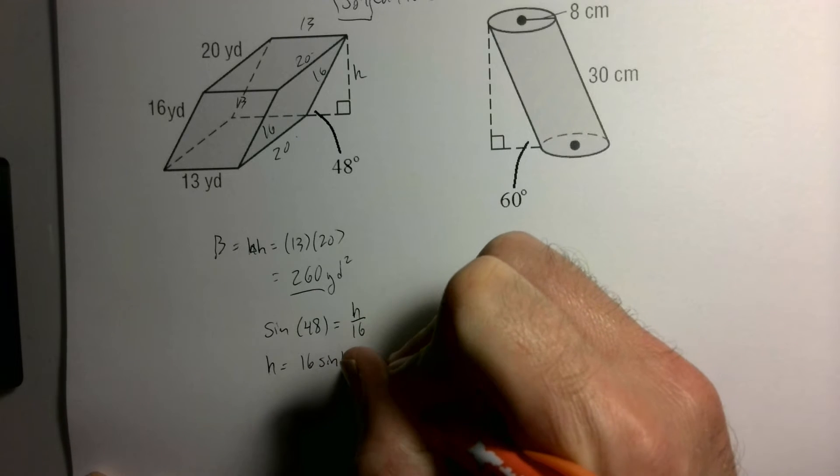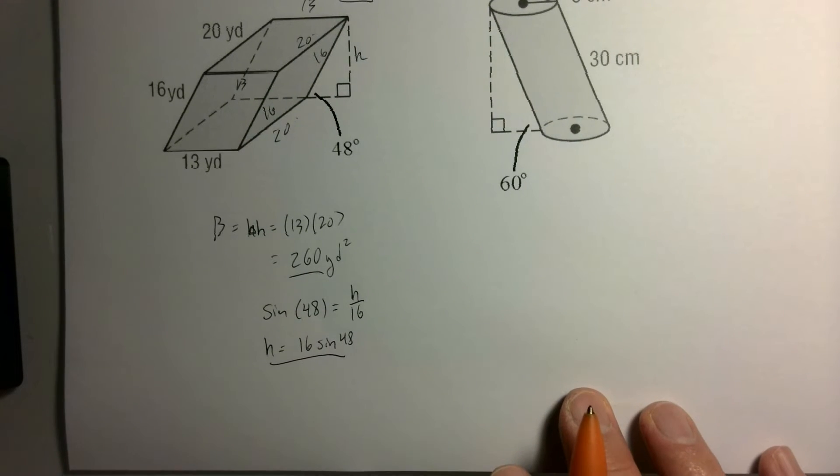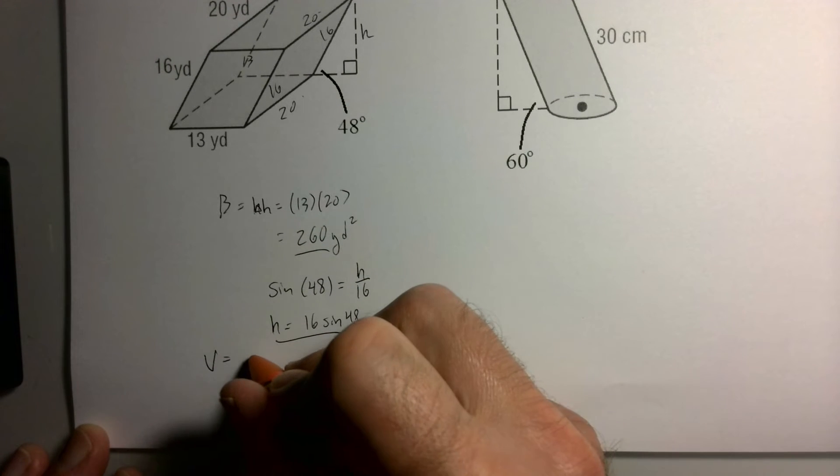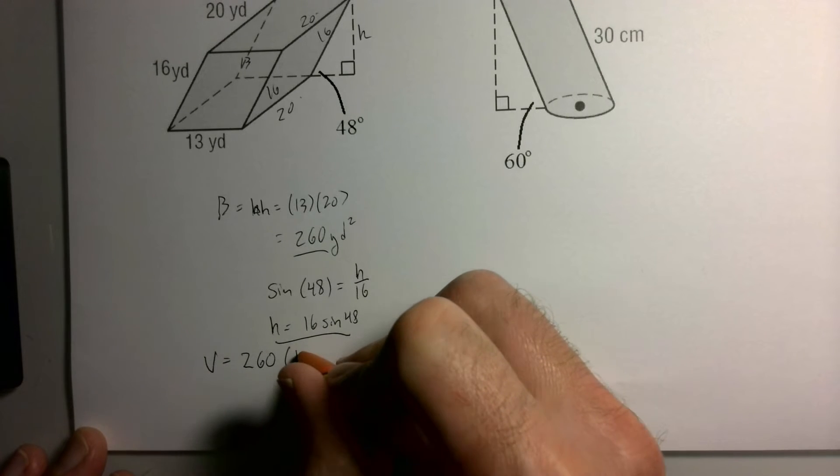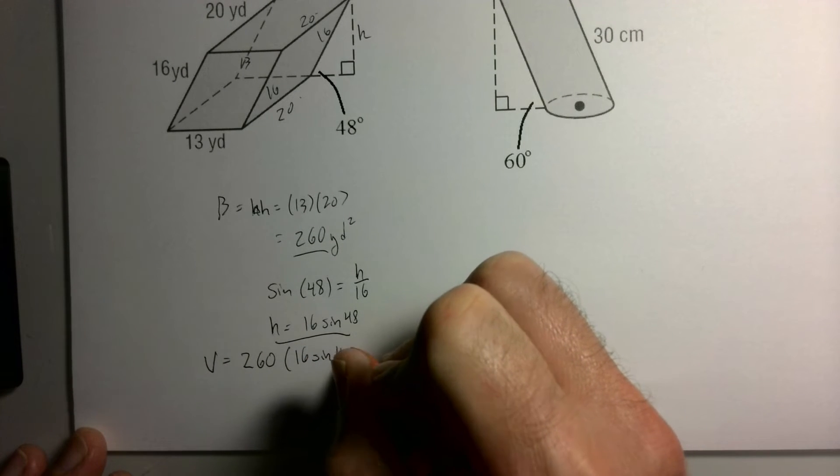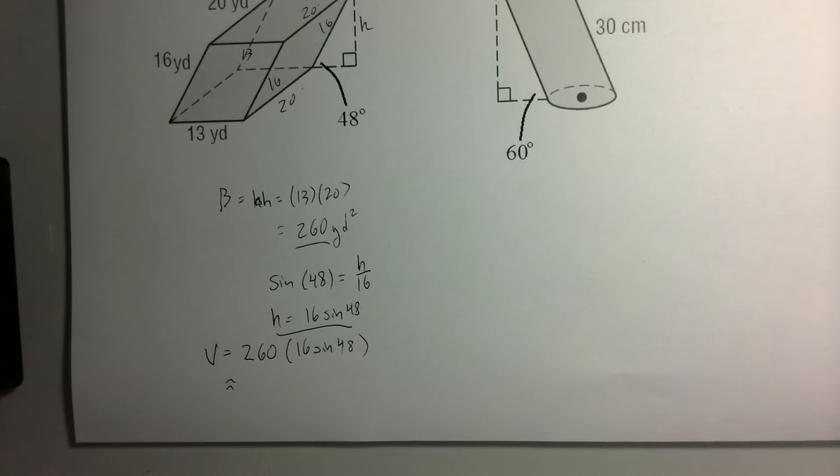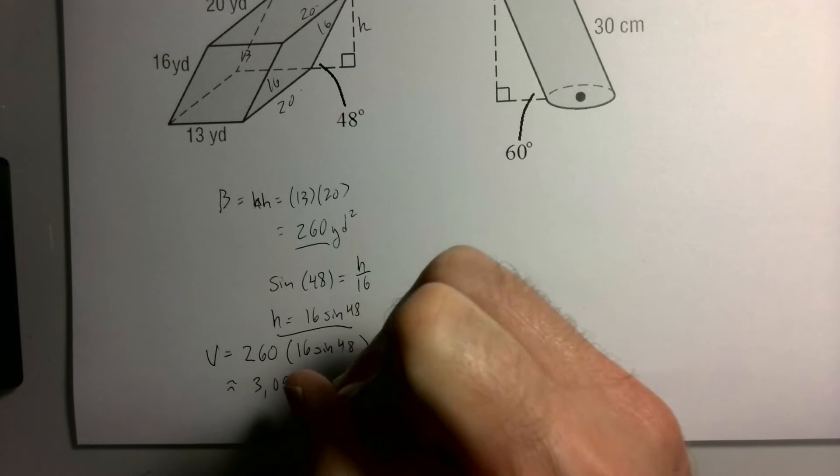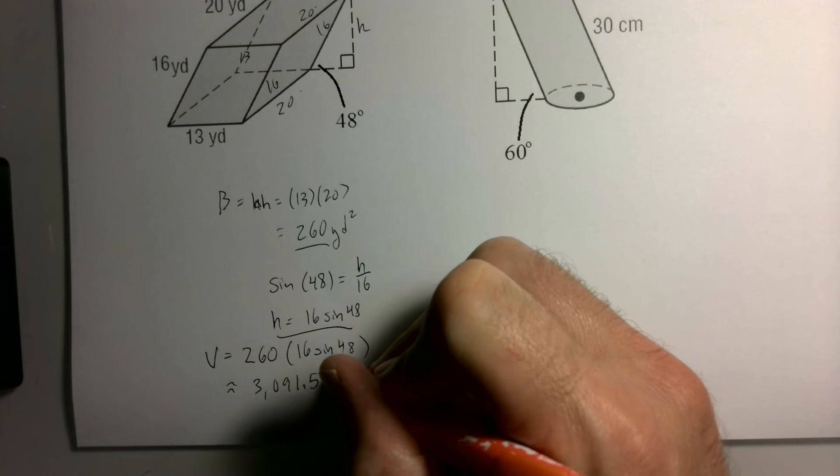So volume is area of base times 16 sine of 48. I'm going to round off this one just to see what that comes out to be. So 260 times 16 sine 48, I'm getting about 3091. Yeah, I'm in degree mode, so this comes out to be about 3091.5 cubic yards.